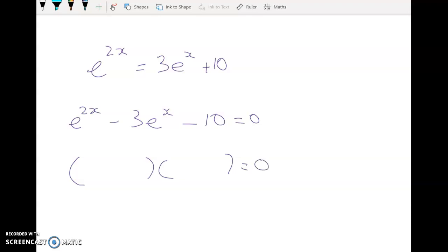We've got e to the x here, e to the x here. We want two numbers that times to give me negative 10 and have got a gap of 3. So it's going to be a 5 and a 2, and the subtraction is going to go with this one here.